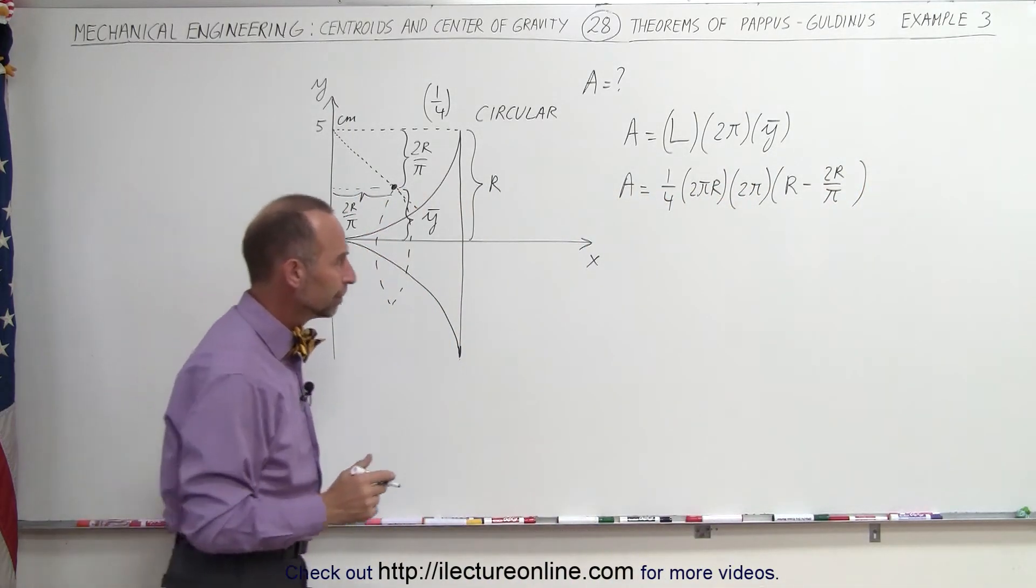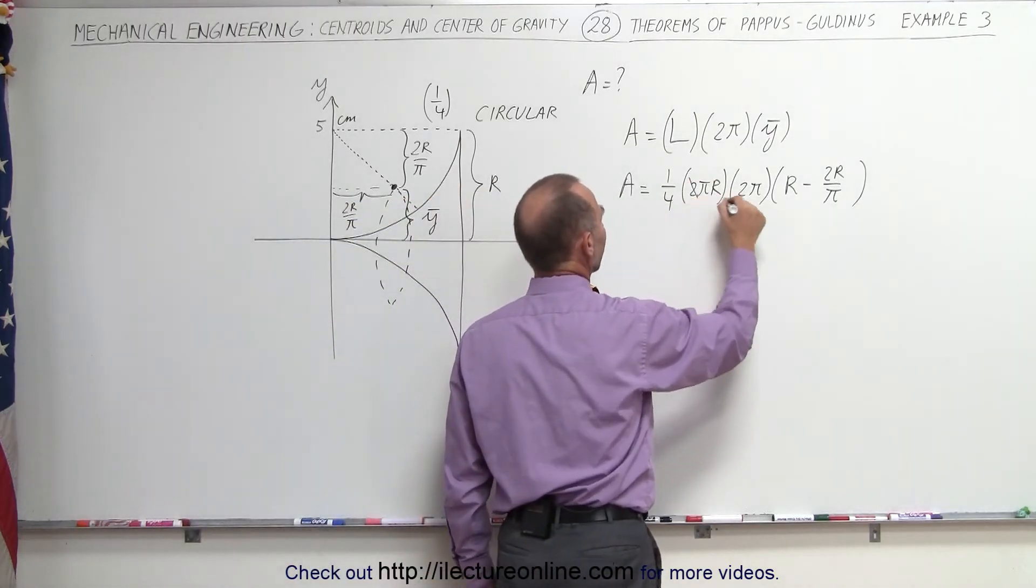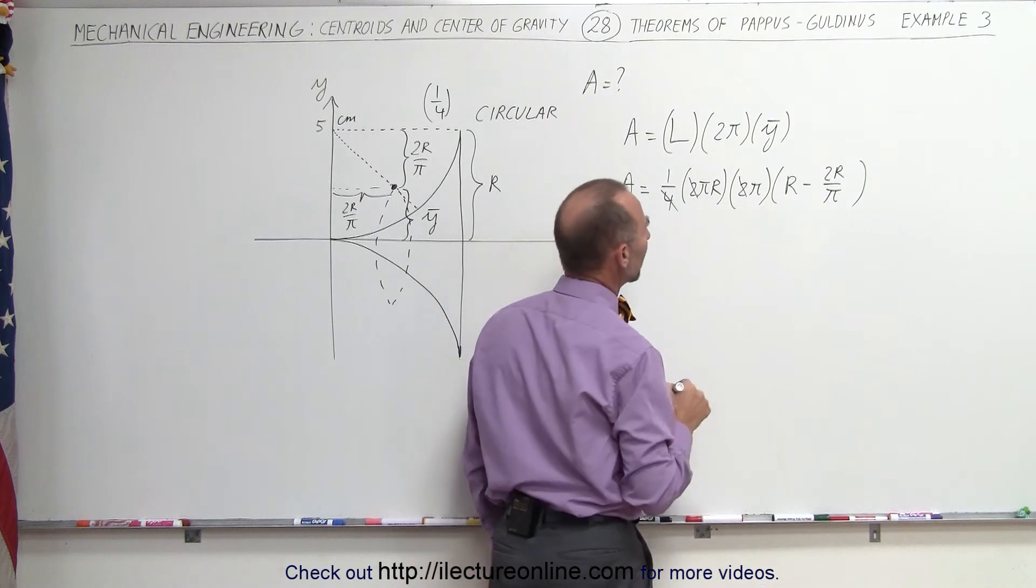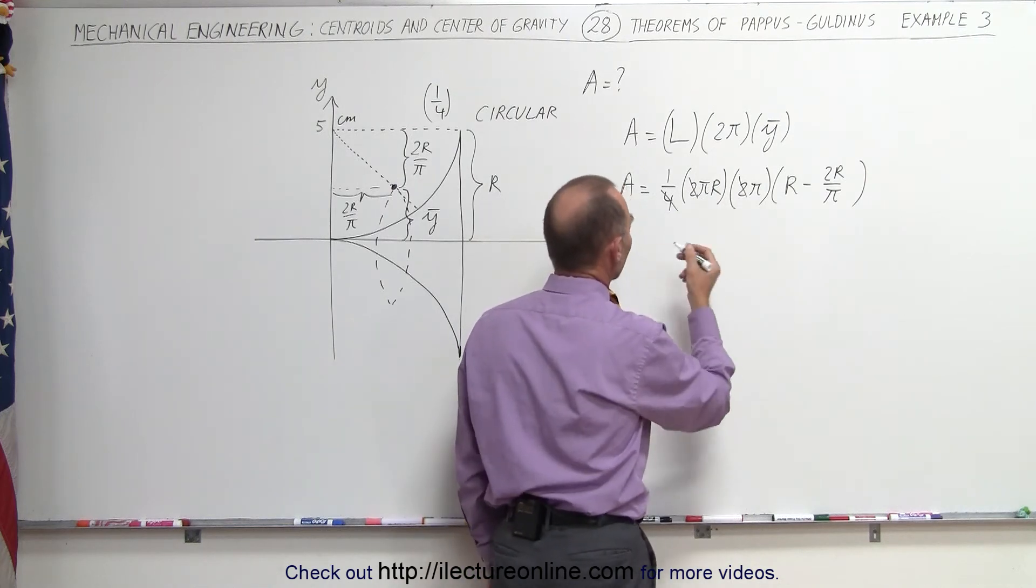Now let's go ahead and work this out. We have divided by 4. We have 2 times 2 in the numerator. That cancels out. And that's about all we can cancel at this point. Let's go ahead and simplify.